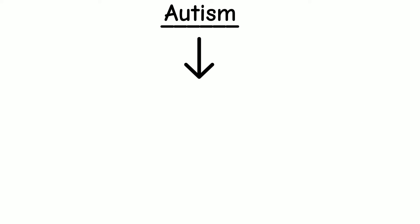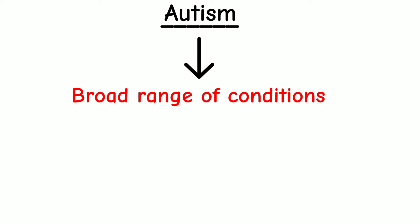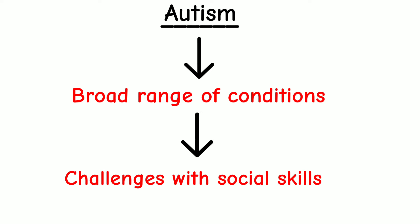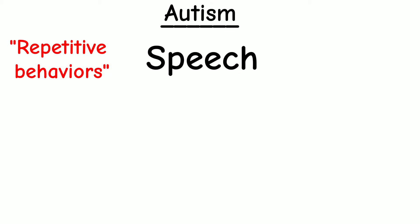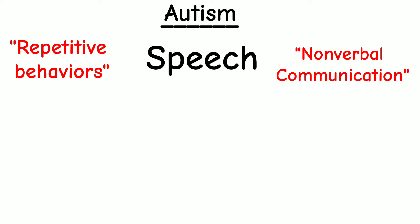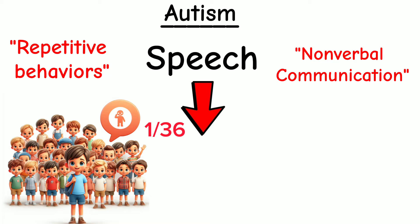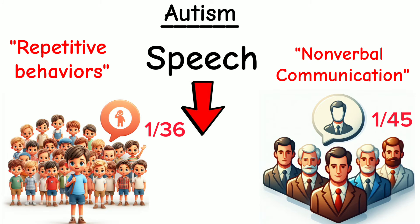Autism refers to a broad range of conditions characterized by challenges with social skills, repetitive behaviors, speech, and nonverbal communication. According to the Centers for Disease Control, autism affects an estimated 1 in 36 children and 1 in 45 adults.